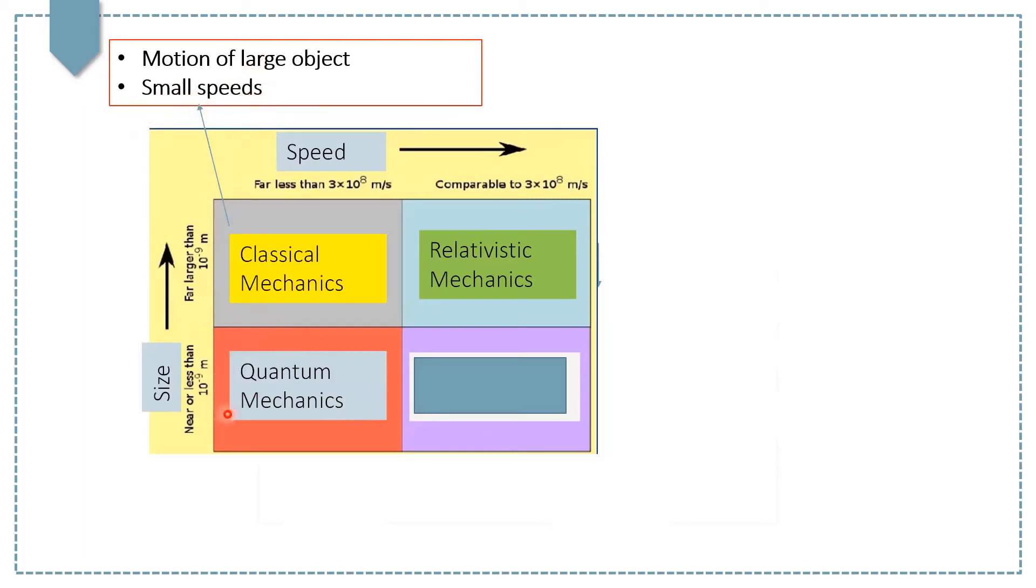Now, if an object has a smaller size, near to or less than 10 to the power minus 9 meters, classical mechanics can't explain that object's motion. The new mechanics called quantum mechanics plays a role in studying the motion of such small objects.